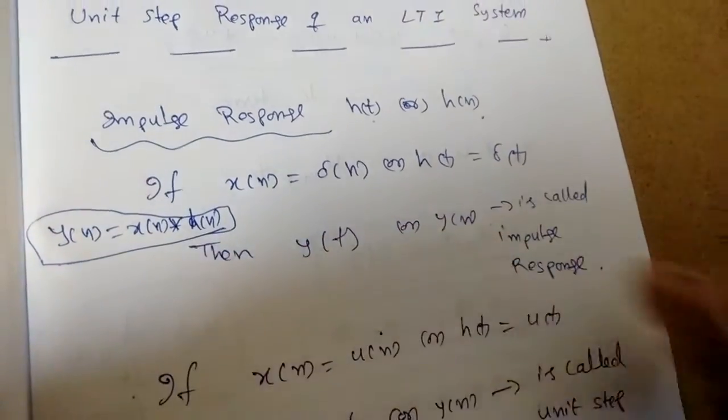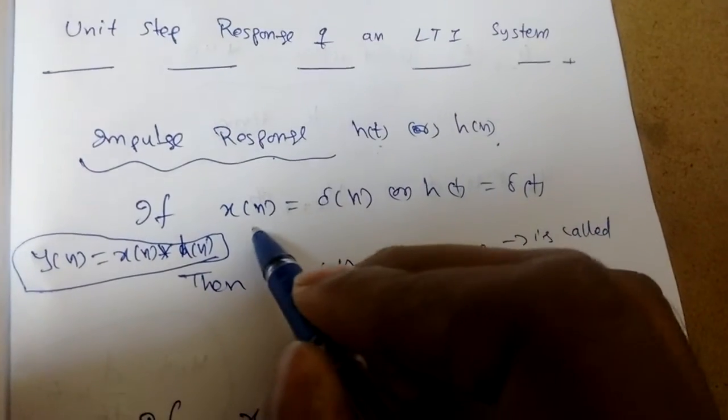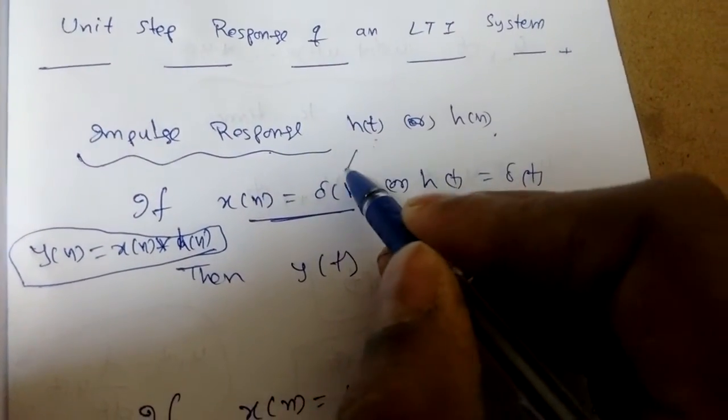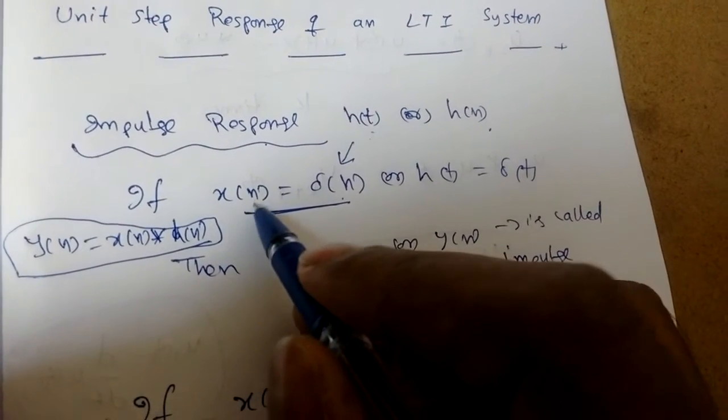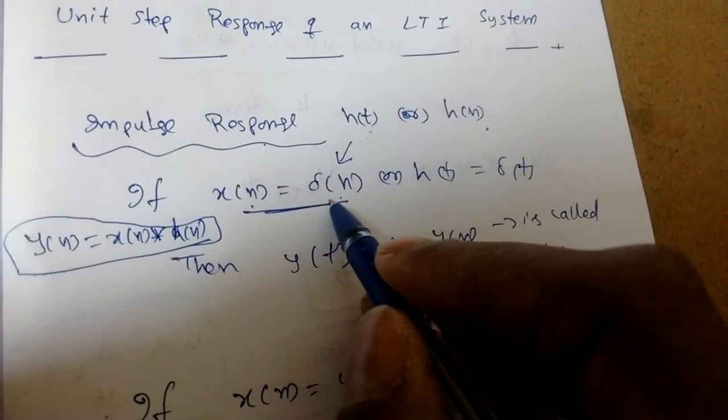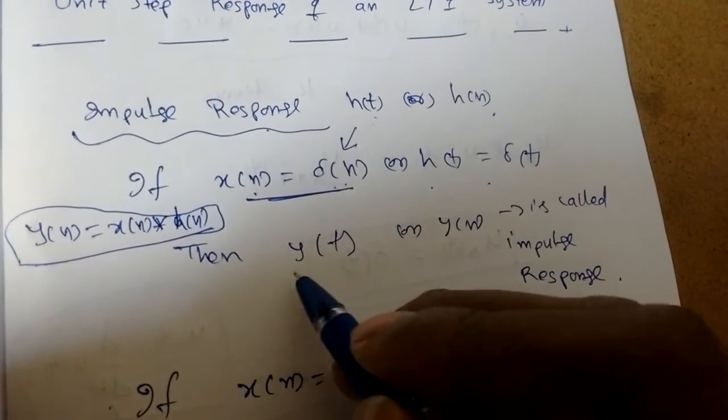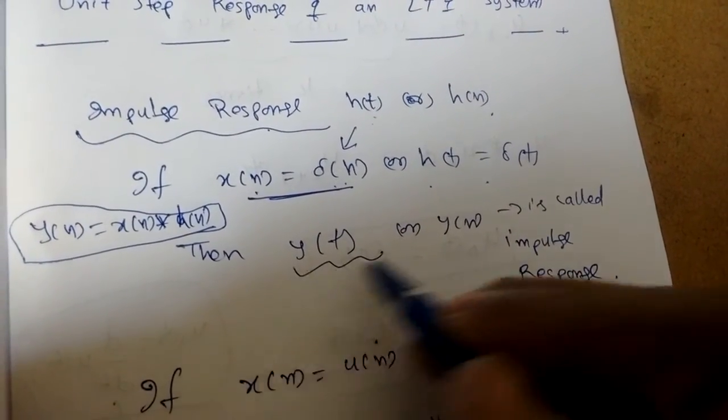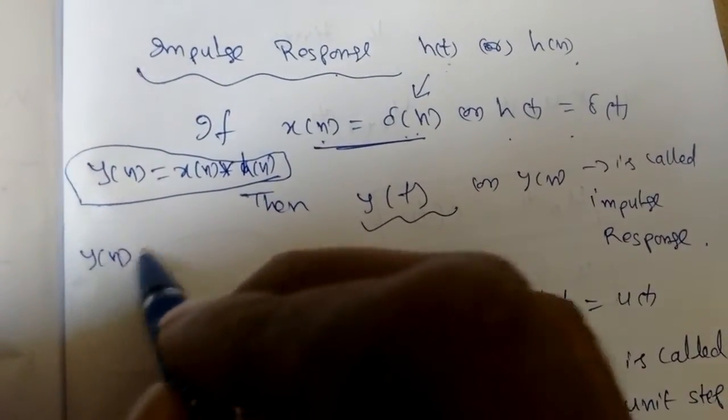What is the name impulse response? For input x(n) equal to delta(n), this is called an impulse signal. Whenever we give an input as x(n) as delta(n), or h(t) equals delta(t) for continuous signals, the y(t) or response of system is called impulse response.